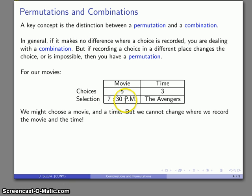In this case, it's actually impossible to switch where we record the choice. So if it's impossible, then what we're dealing with is a permutation.